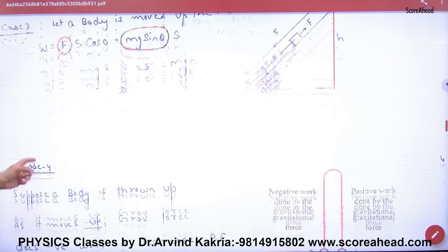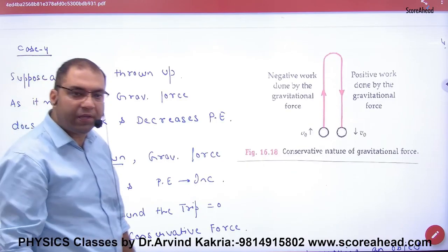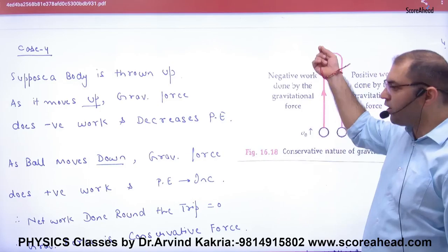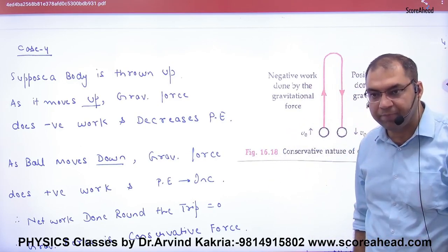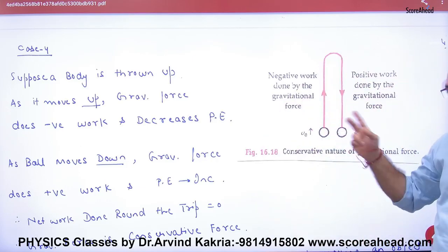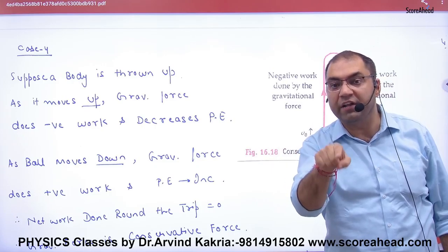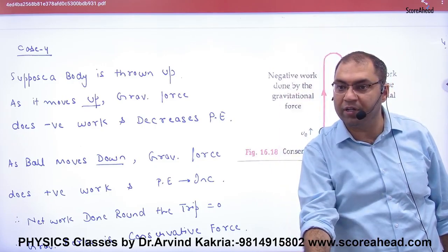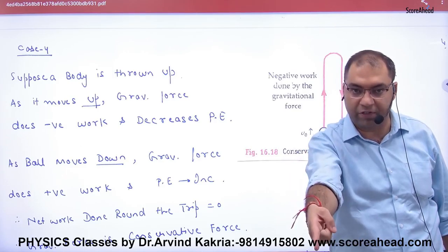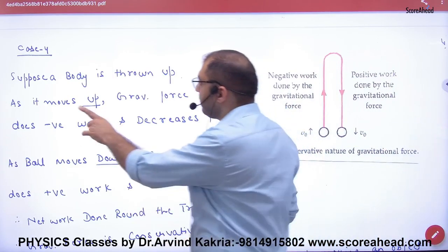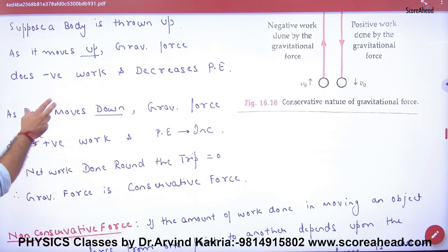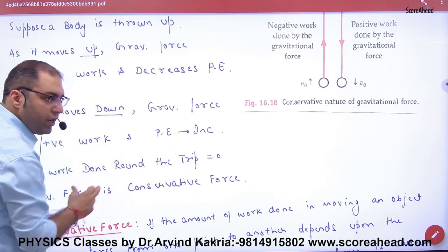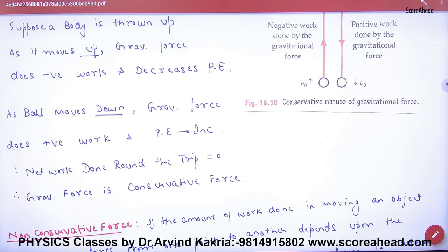Case number four: if a ball is thrown up and comes back down, gravity does negative work going up, which is minus MGH, and positive work coming down, which is plus MGH. The net work done for the round trip is zero. Since the work done in a round trip is zero, the gravitational force is conservative. This completes the proof.